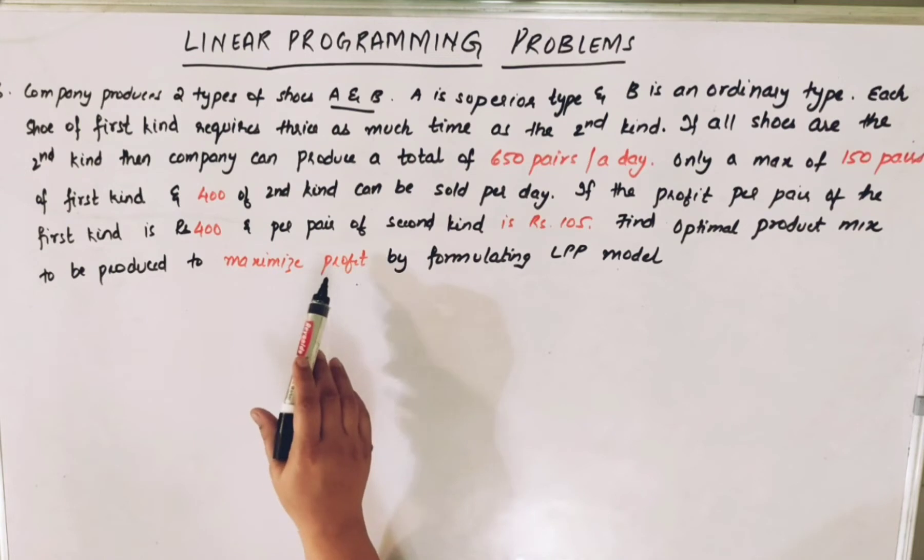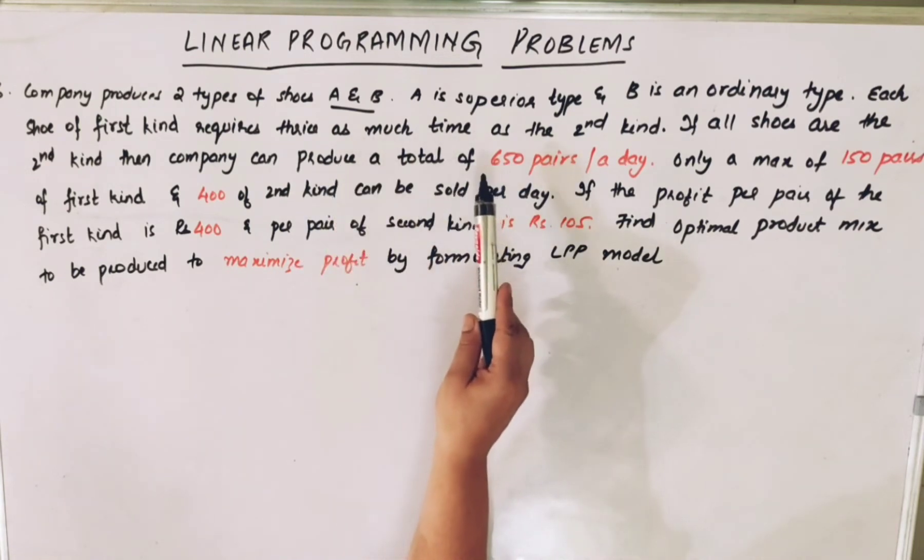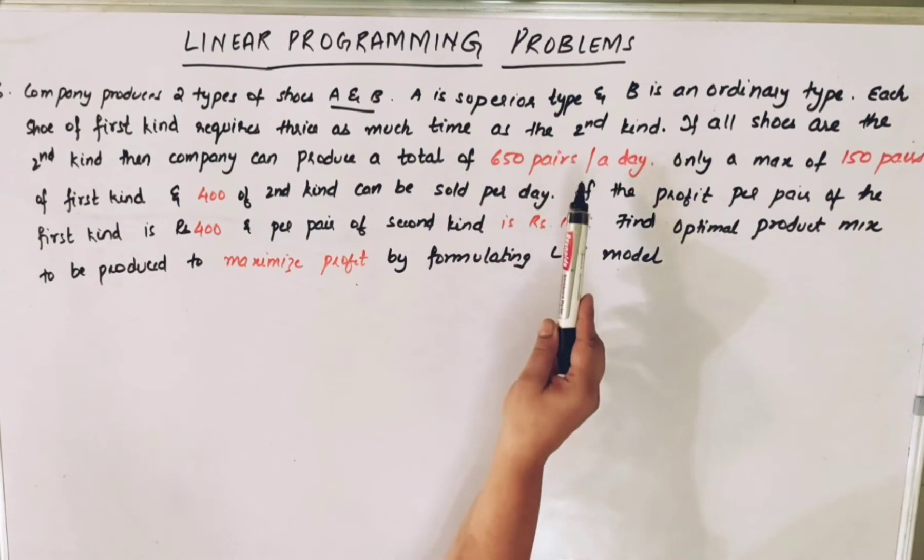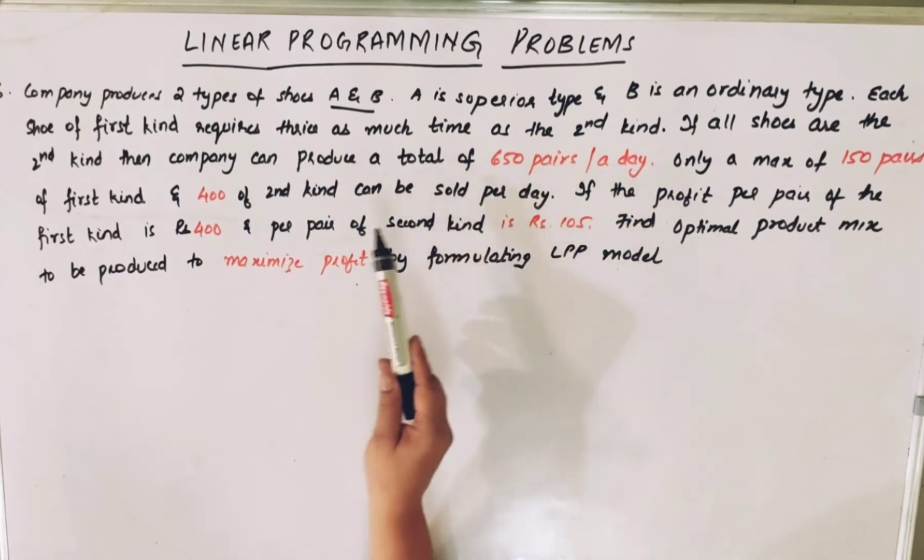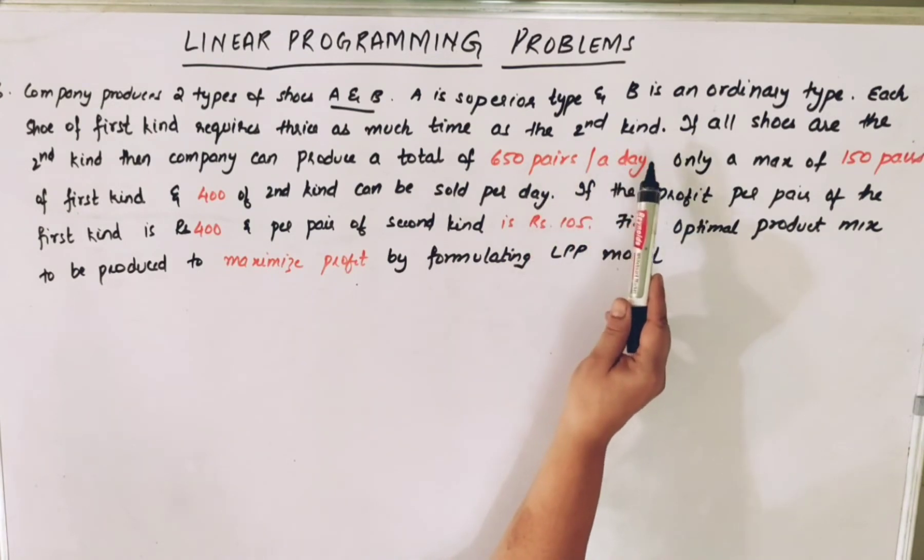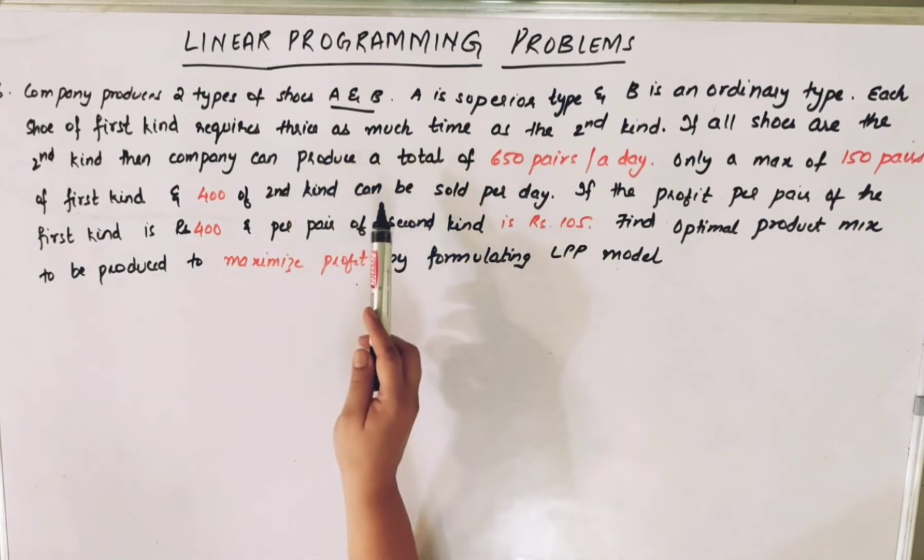The problem states that there are two kinds of shoes: shoes A and shoes B. Shoes A is of superior type and it takes three times more time than the second kind of shoe takes. So if the second kind of shoe takes one hour, then shoe A, that is the first kind, will take three hours.